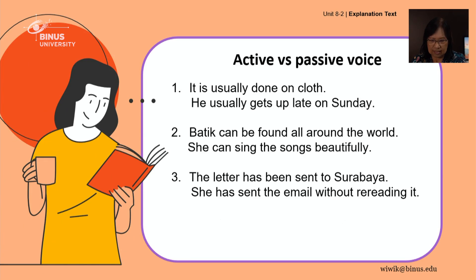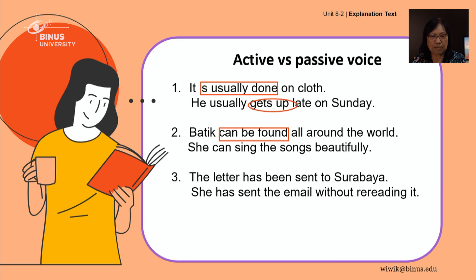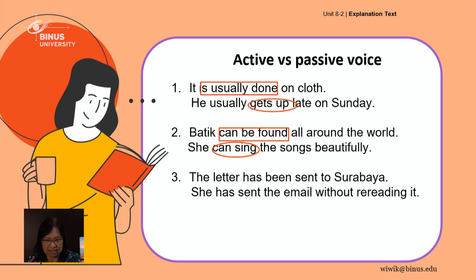Here is how we compare passive and active voice. 'It's usually done' is passive; 'gets up' is active. 'Can be found' is passive; 'can sing' is active. For number three, 'has been sent' is passive and 'has sent' is active.